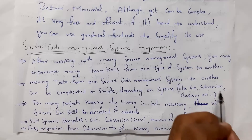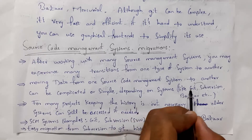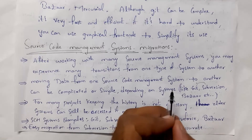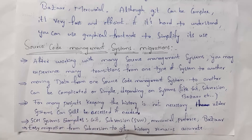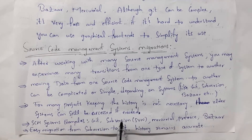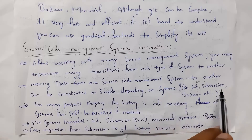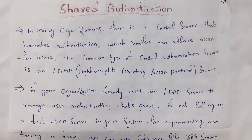Moving data from one SCM to another can be simple or complicated depending on the systems involved, such as Git, Subversion, or Bazaar. For example, transferring data from Subversion to Git is very easy, but transferring from Git to Bazaar can be very tough. For many projects, keeping history is not necessary, and you can still access old system data if needed. Git, Subversion, Mercurial, Perforce, and Bazaar are all examples of source code management systems.